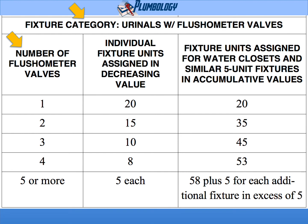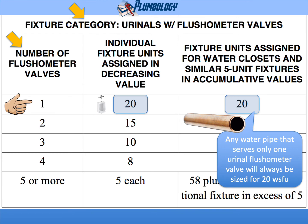The bottom half of Table 610.10 is for the category of urinals with flushometer valves. The left-hand column is the same: 1, 2, 3, 4, 5 or more. What changes is that the decreasing scale for urinal flushometer valves is different. Instead of 40, 30, 20, 15, 10 like we had for water closets, we're going to have 20, 15, 10, 8, and 5 for the urinals. If you have one urinal flushometer valve, its value is 20 water supply fixture units, and the accumulative value for that branch piping would be 20 fixture units. So any water pipe serving only one urinal flushometer valve will always be sized for 20 water supply fixture units.